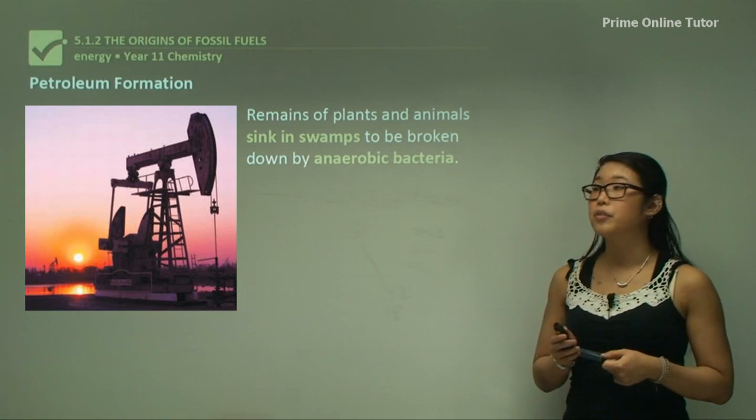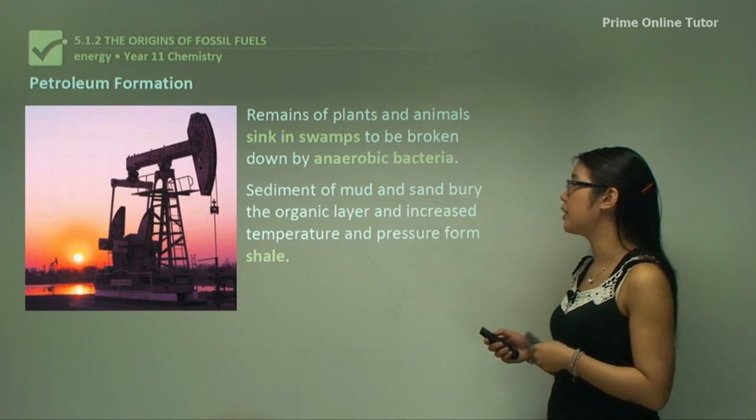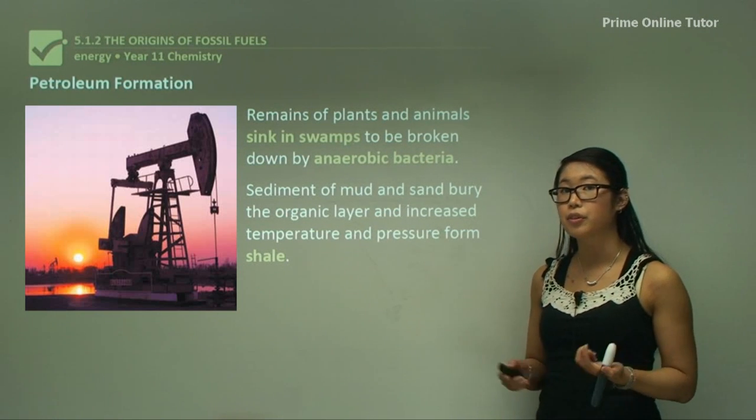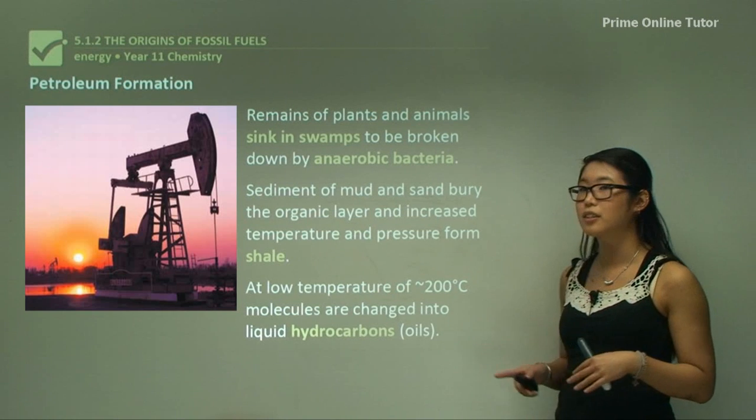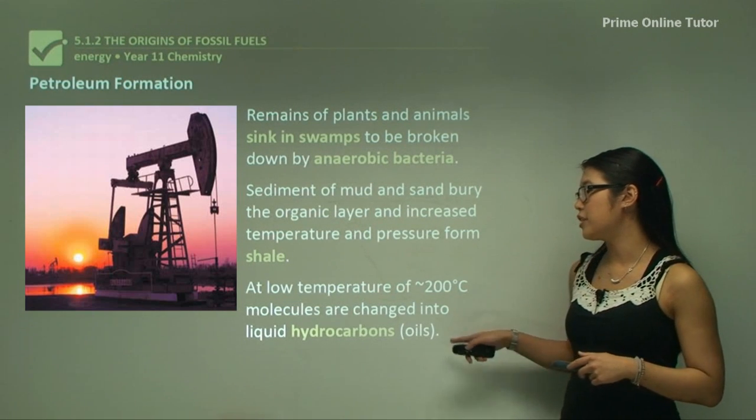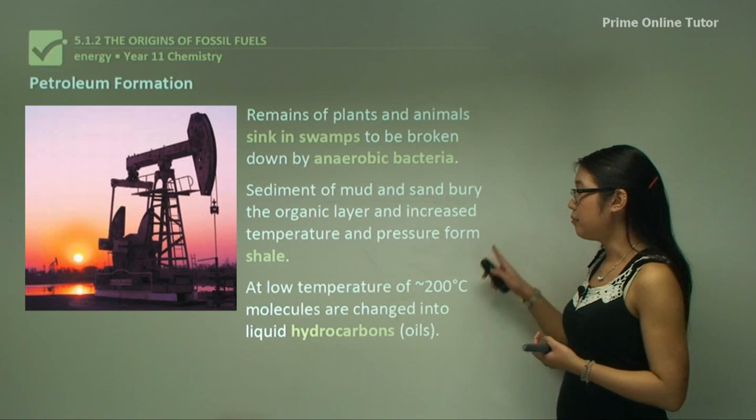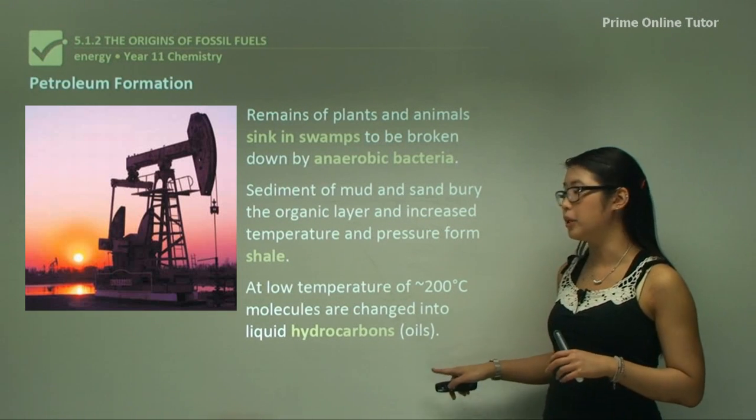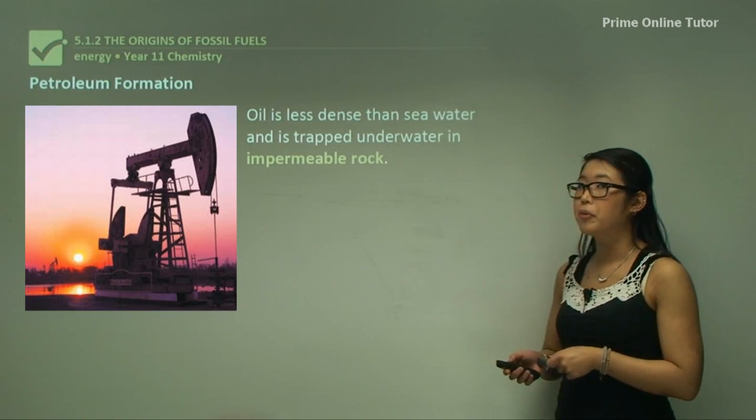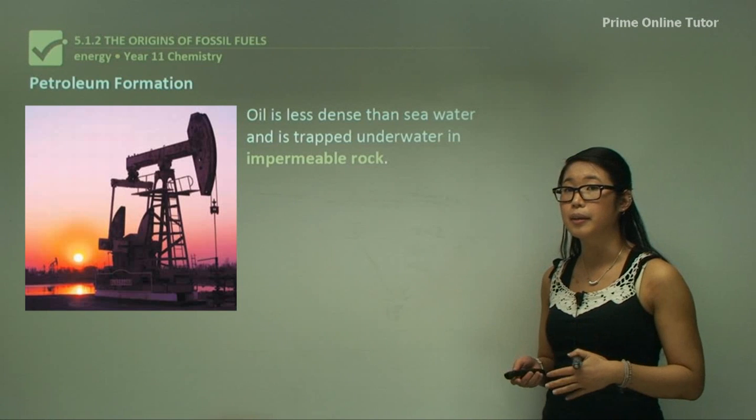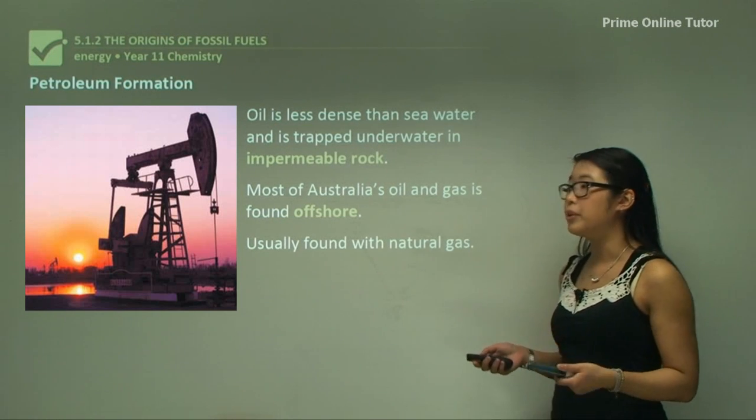Petroleum formation is from the remains of plants and animals that sink in swamps to be broken down by anaerobic bacteria similar to coal. Sediment of mud and sand bury the organic layer and increased temperature and pressure form shale. At low-ish temperatures of about 200 degrees Celsius, molecules are changed into liquid hydrocarbons. Oil is less dense than seawater and is trapped underwater by impermeable rock. Most of Australia's oil and gas is found offshore in the sea.